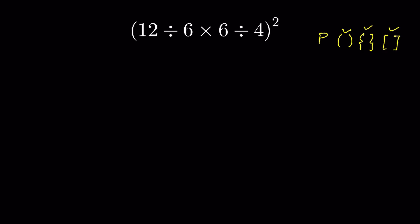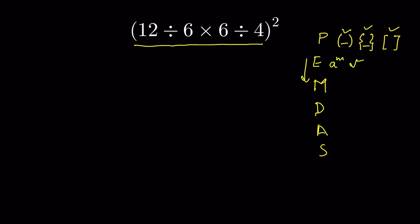After parenthesis we solve exponents. Also remember that within parenthesis we also follow the order of operations. So within parenthesis, if there is an exponent, we solve exponent first. The order is: exponents and indices and roots, then multiplication and division, then addition and subtraction. Now here we have parenthesis and all the operations are within parenthesis.